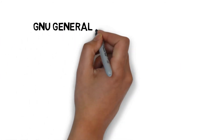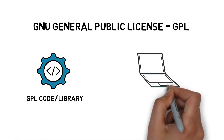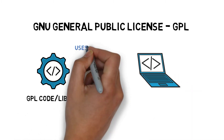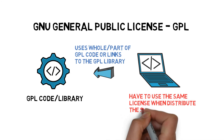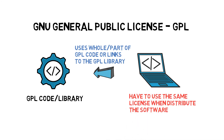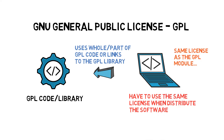In the copyleft category, one of the most famous licenses is the GNU General Public License, abbreviated as GPL. Since it is a copyleft license, any software that uses the whole or part of GPL code or links to the GPL library must distribute all its source code under the same license. This means if you are using some GPL libraries in your software, you have to use the same license when you distribute your software to let others use your code for free.